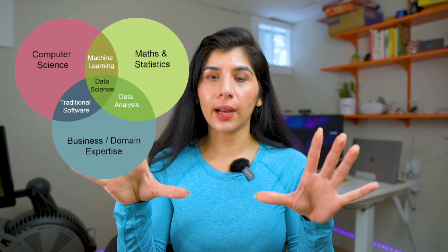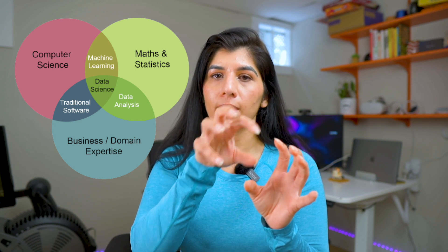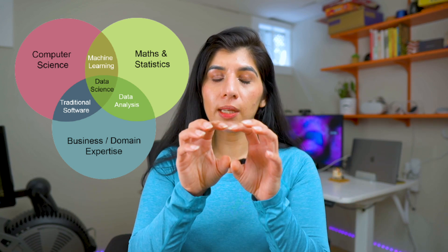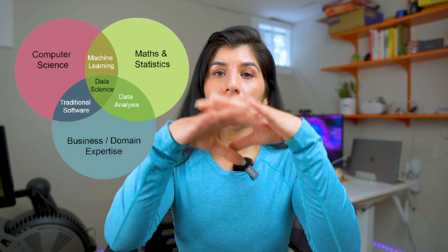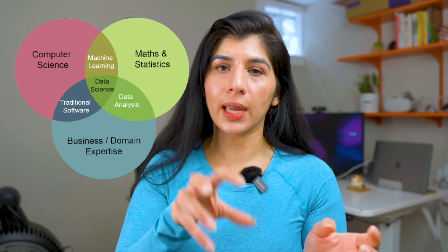Let's talk about the data scientist generalist role and what it is. Look at this diagram. This diagram shows that the data scientist generalist role is basically the middle part — it's a mix of engineering, statistics, machine learning, business understanding, as well as data analytics. This role is a central role which combines understanding of all those ideas and serves more as a generalist, where you are typically not building deep machine learning models from scratch, but rather using existing libraries and existing models and applying them to solve business problems.